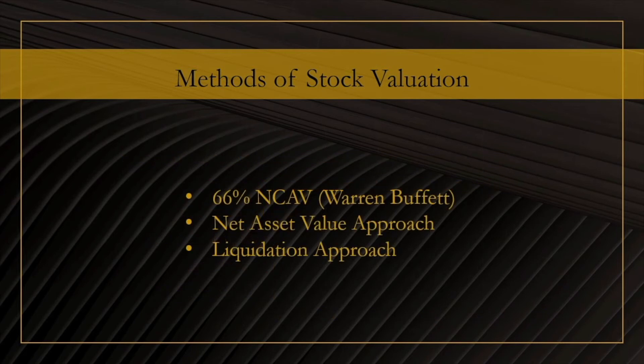We'll be looking at three variants of the net asset value approach. Firstly, the 66% NCAV approach that Warren Buffett has been using, particularly earlier in his career. Then, the more common net asset value approach, and finally, the liquidation approach.